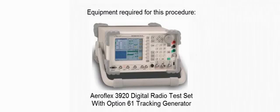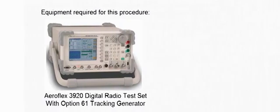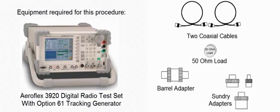Equipment required for this procedure includes the instrument with the tracking generator option, two coaxial cables, a 50 ohm load, a barrel adapter, and any other adapters required for interconnection with the duplexer cavity filter.